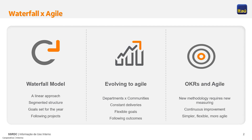The world is changing very fast, and in the past few years a lot of companies — specifically in IT — started migrating from the waterfall model to the agile model. There are many frameworks such as Lean, Scrum, and Kanban. In the agile model, instead of departments working separately, we have communities where everyone collaborates — squads, communities, and release trains.